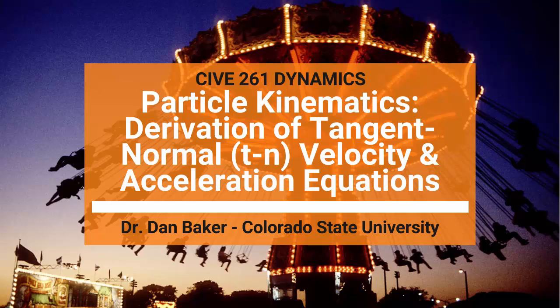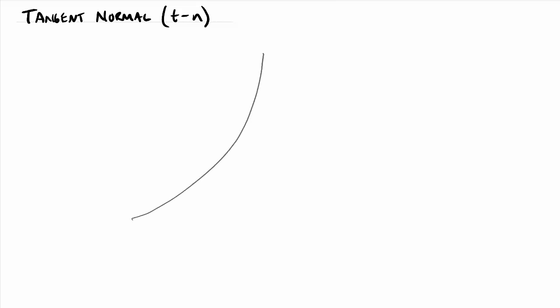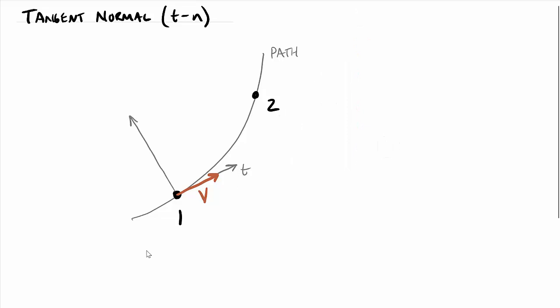Our tangent normal coordinate system, often abbreviated t-n, is a particle-based coordinate system, which essentially means that as a particle moves along a path — let's add a path here to our drawing — as this particle moves from location one up to location two, its axis system moves along with it. The tangent direction is always going to be in the direction of motion. We could draw the velocity vector right on top of this line; a hundred percent of the velocity is in the direction of tangent. And then the normal goes toward the local center of curvature, so the normal axis is perpendicular to the tangential axis.